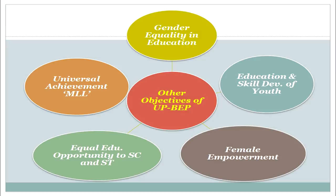As far as the RTE Act is concerned, we are now saying every child should complete 8 years of elementary schooling by the age of 14 years. Another objective is universal achievement, that is minimum levels of learning (MLL). Every child should attain the minimum level of learning, which is a quality parameter assessing the quality of elementary education being delivered in schools. This was also one of the objectives of the UP Basic Education Project.